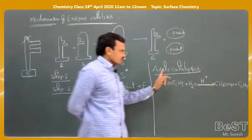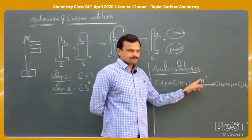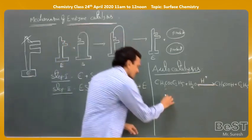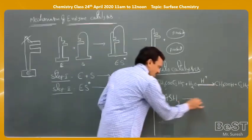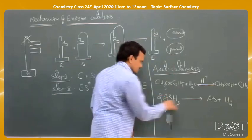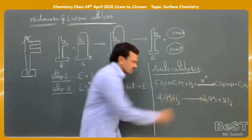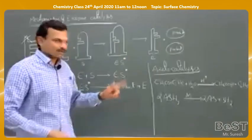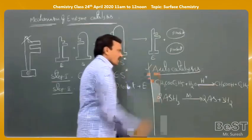Reactions in which one of the reaction products itself acts as a catalyst are called auto catalysis. One more example: decomposition of AsH3 (arsenic hydride, called arsine). AsH3 on decomposition gives arsenic plus hydrogen. The arsenic formed itself acts as a catalyst in the reaction. Such processes are called auto catalysis.